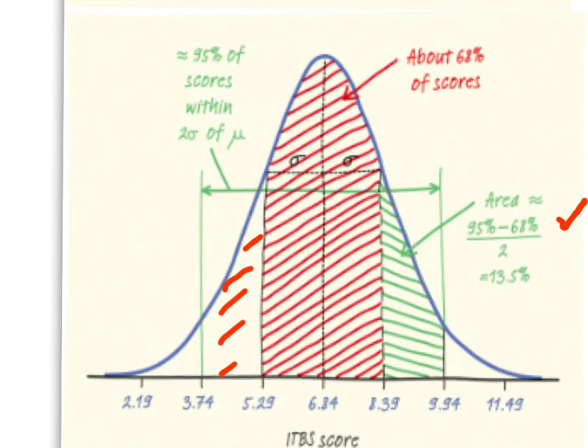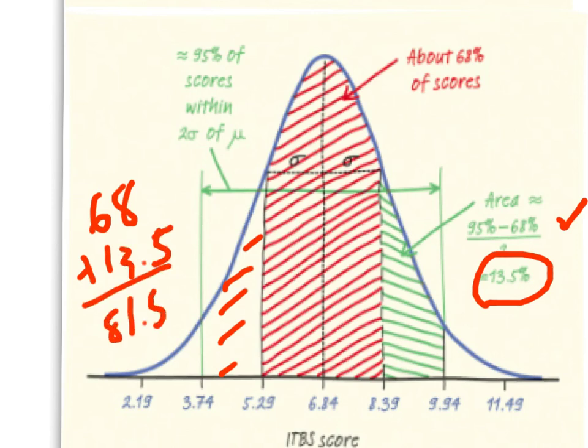But since I only want the right-hand side, the green side, I divide that by two, and so it's 13.5% of our data would be between 8.39 and 9.94. So again, to get our final answer here, we could actually add 68 plus 13.5 and realize that there was 81.5% of our data between 5.29 and 9.94.